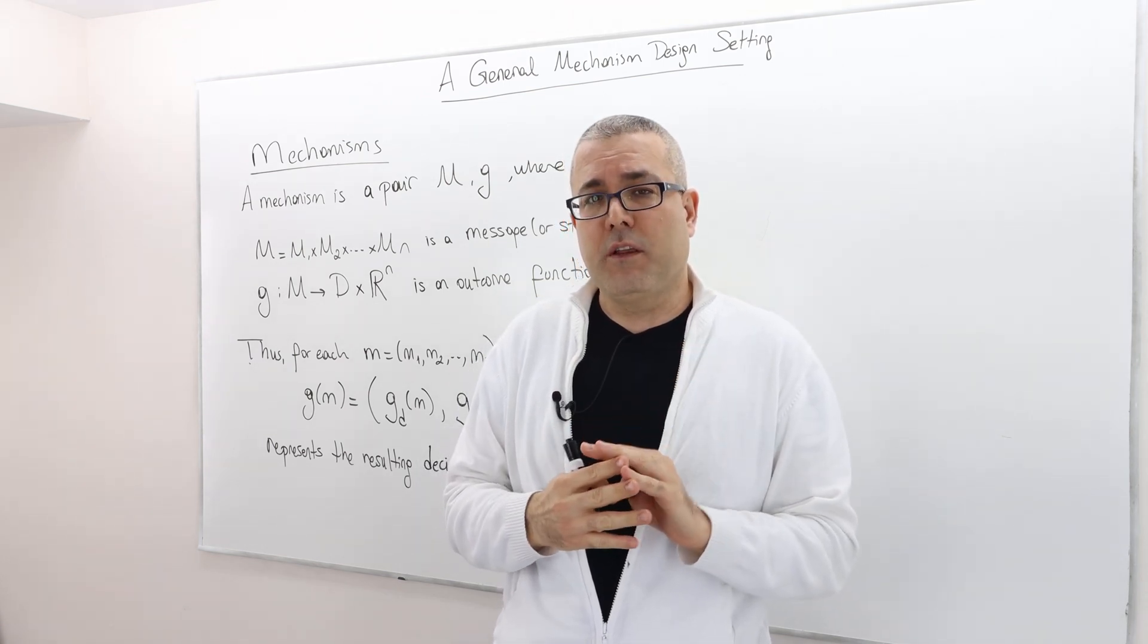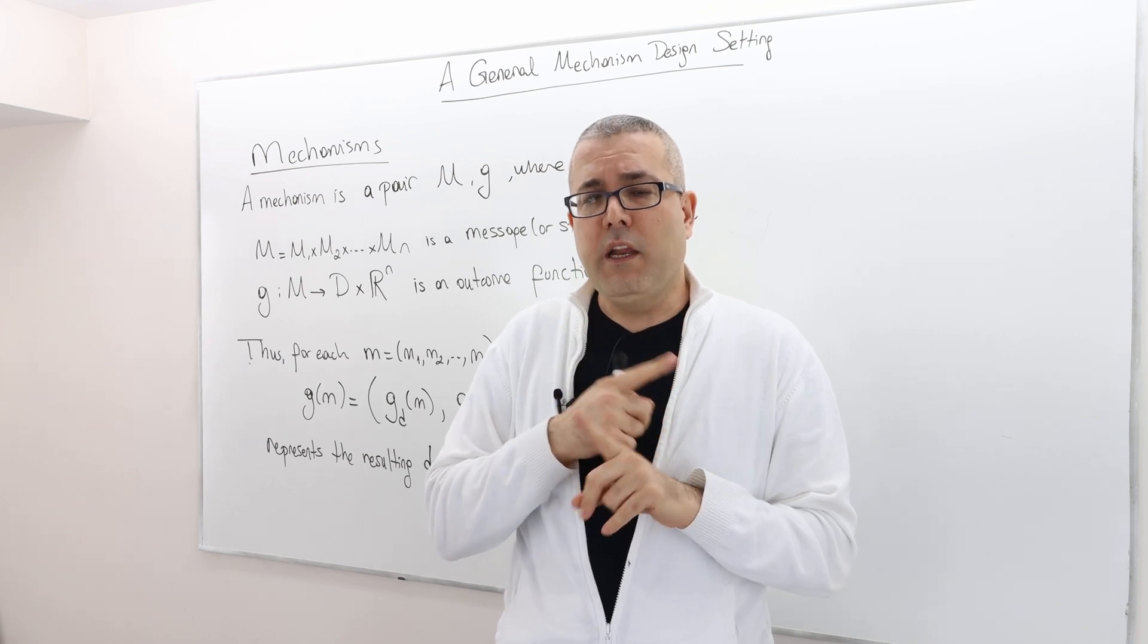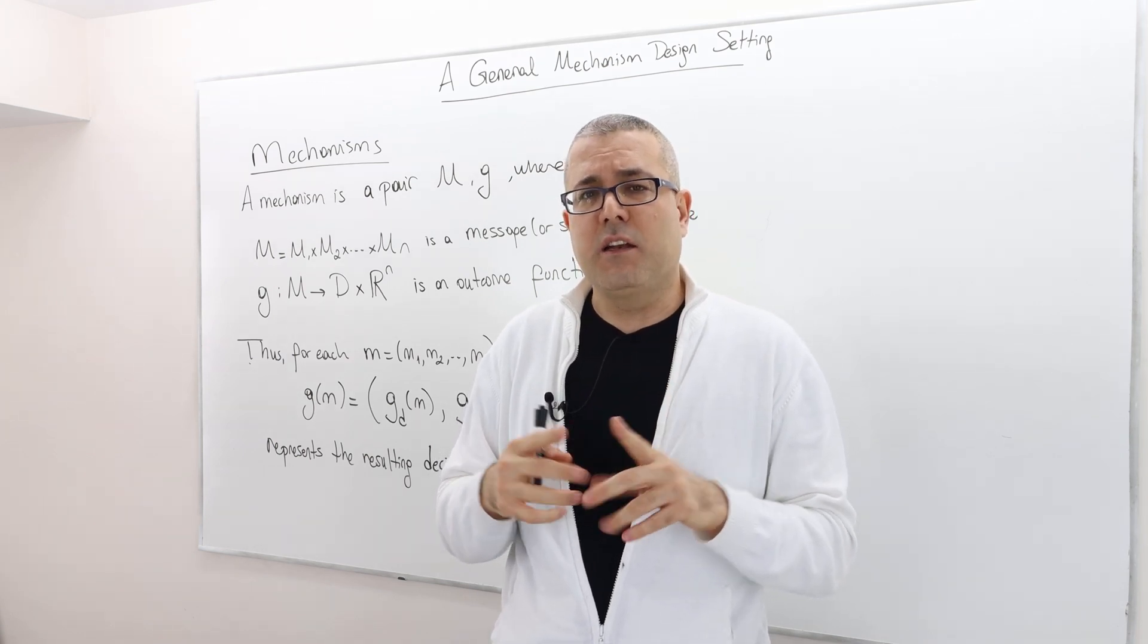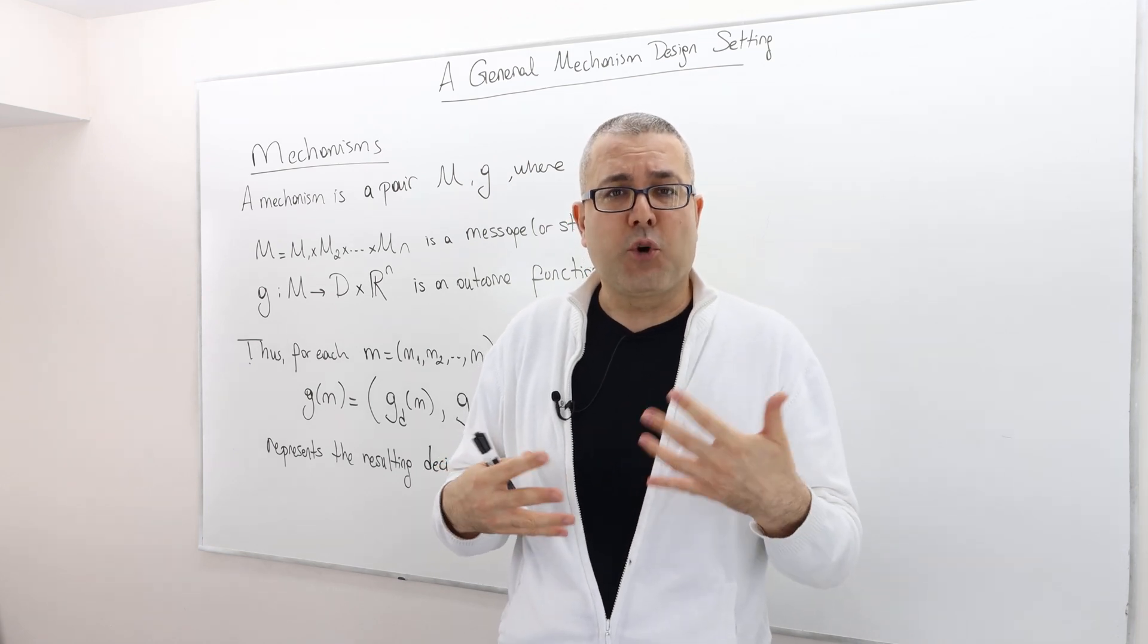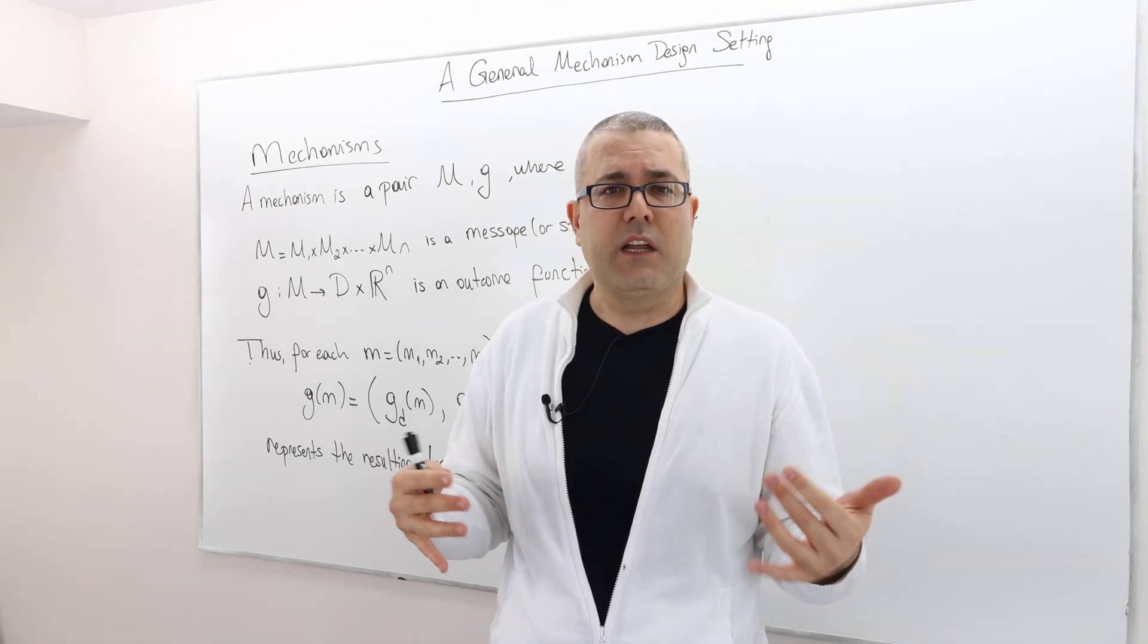Well, there we talked about two mechanisms. One in which the mechanism designer asks the agents to declare their private information, like what is the true state of the world.